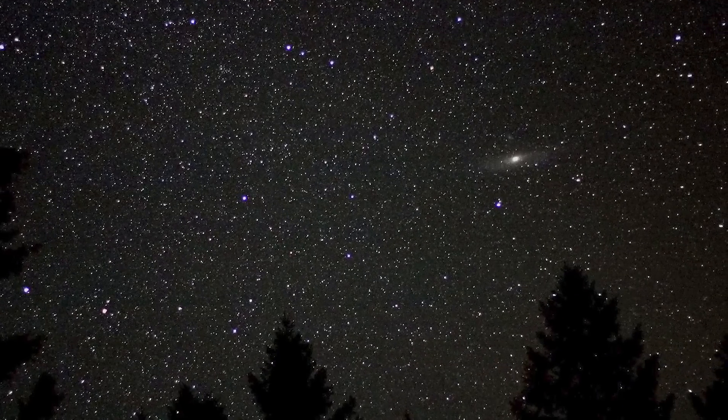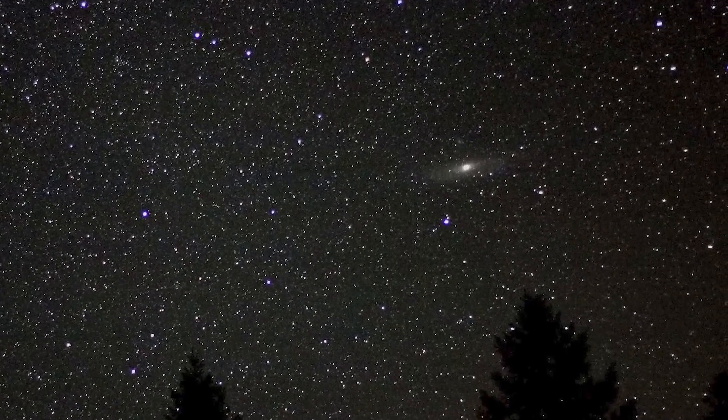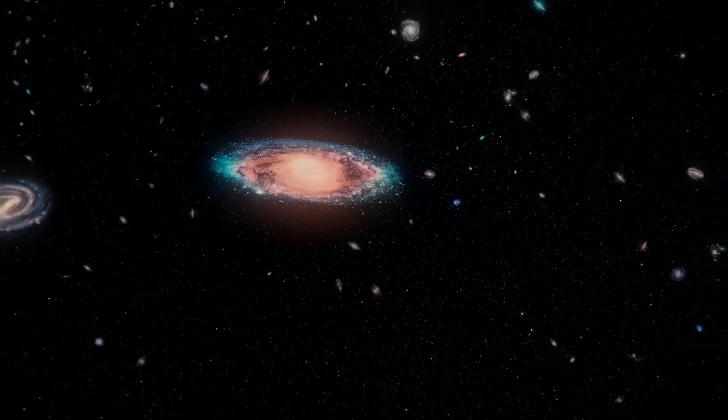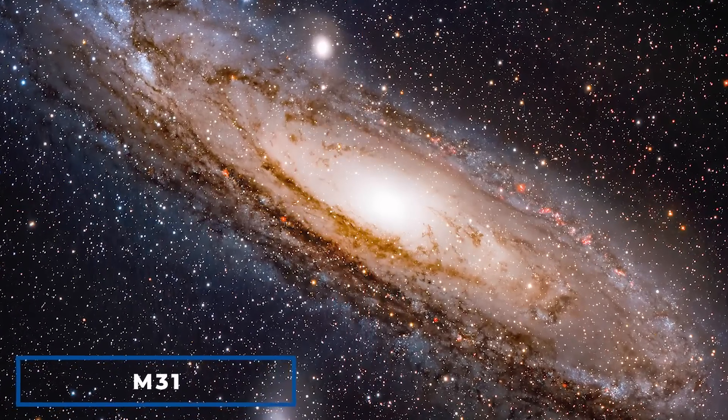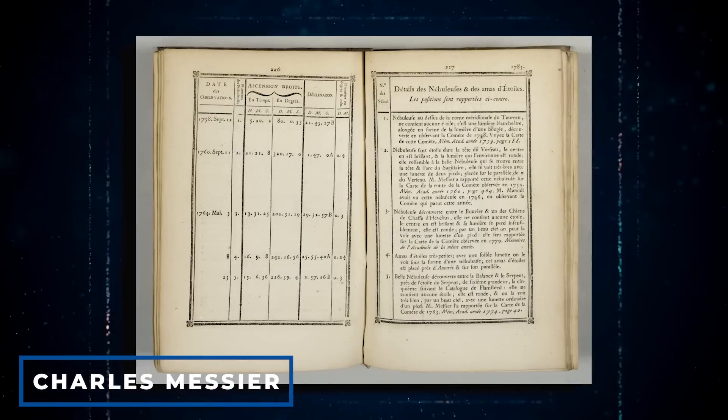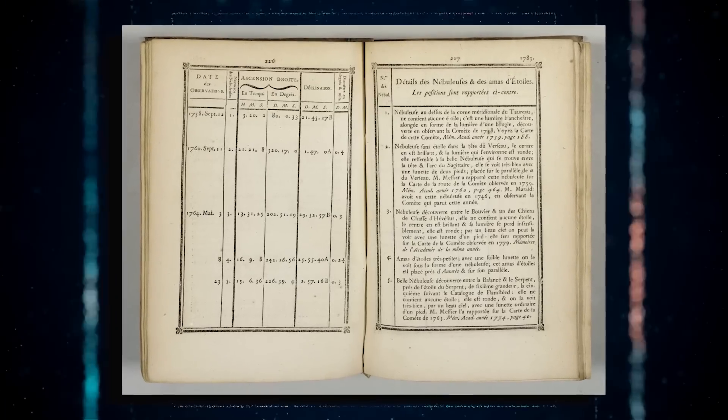It is one of the most well-known objects in the sky visible with the naked eye. Our closest neighboring galaxy is also known as Messier 31 or M31. The name was inspired by Charles Messier, a French astronomer who catalogued the massive galaxy.